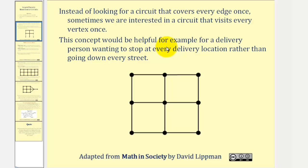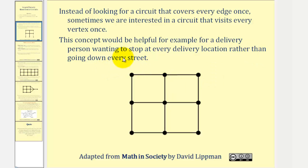This concept would be helpful, for example, for a delivery person wanting to stop at every delivery location rather than going down every street. For example, if a delivery person needed to visit each vertex exactly once for deliveries,